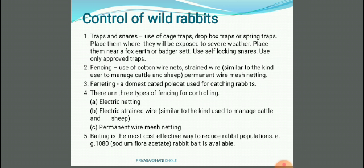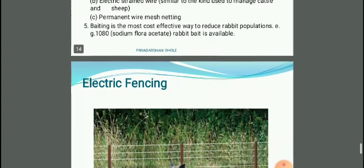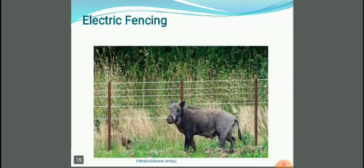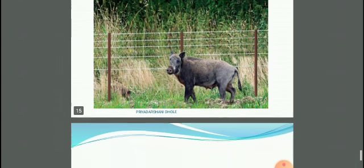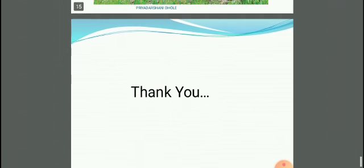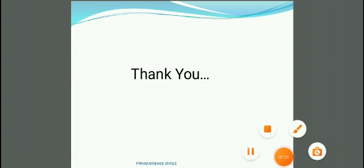Three types of fencing for controlling rabbits: electric netting, electric strain wire similar to that used to manage cattle and sheep, and permanent wire mesh netting. Fifth, poisoning is the most cost-effective way to reduce the rabbit population — for example, 1080, which is sodium fluoroacetate rabbit bait, is available. You can see in this picture the electric fence. This chapter is over; we will see the next chapter in the next lecture. Thank you.